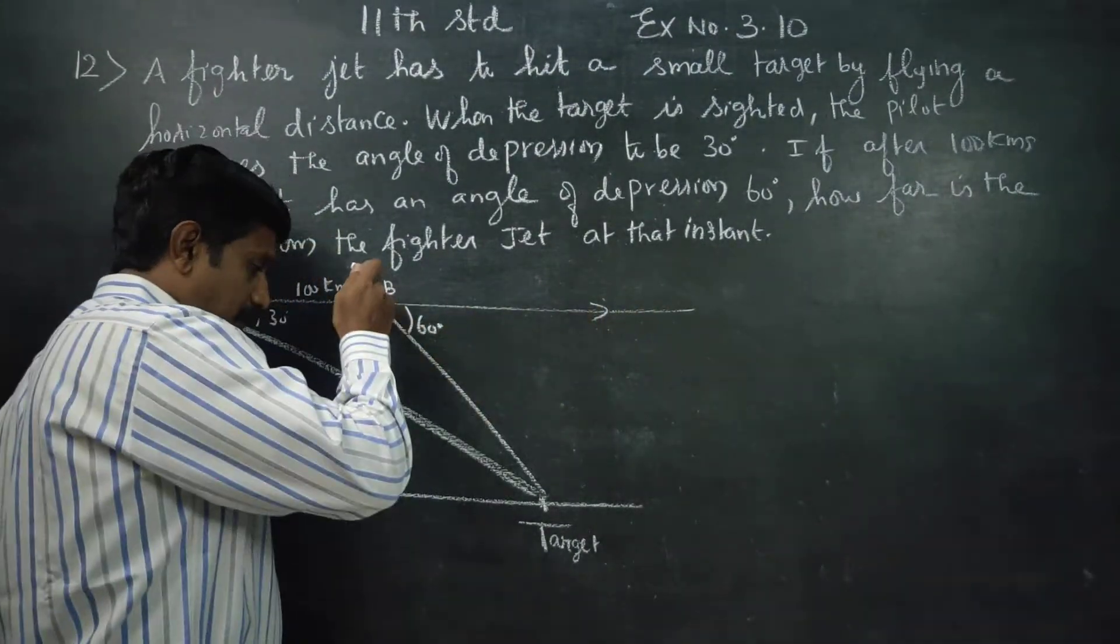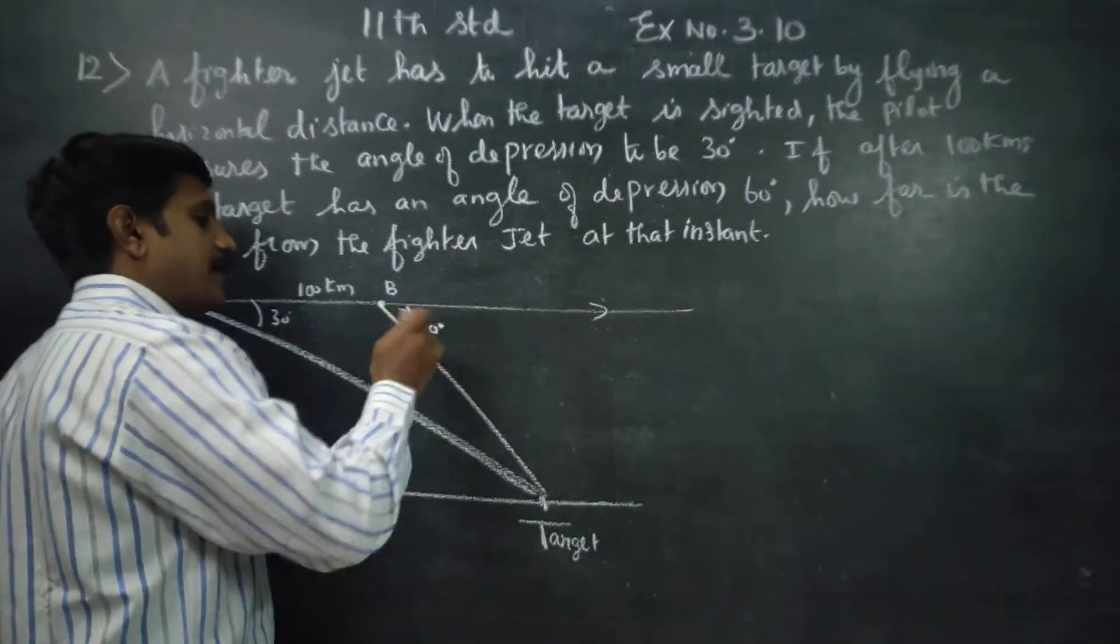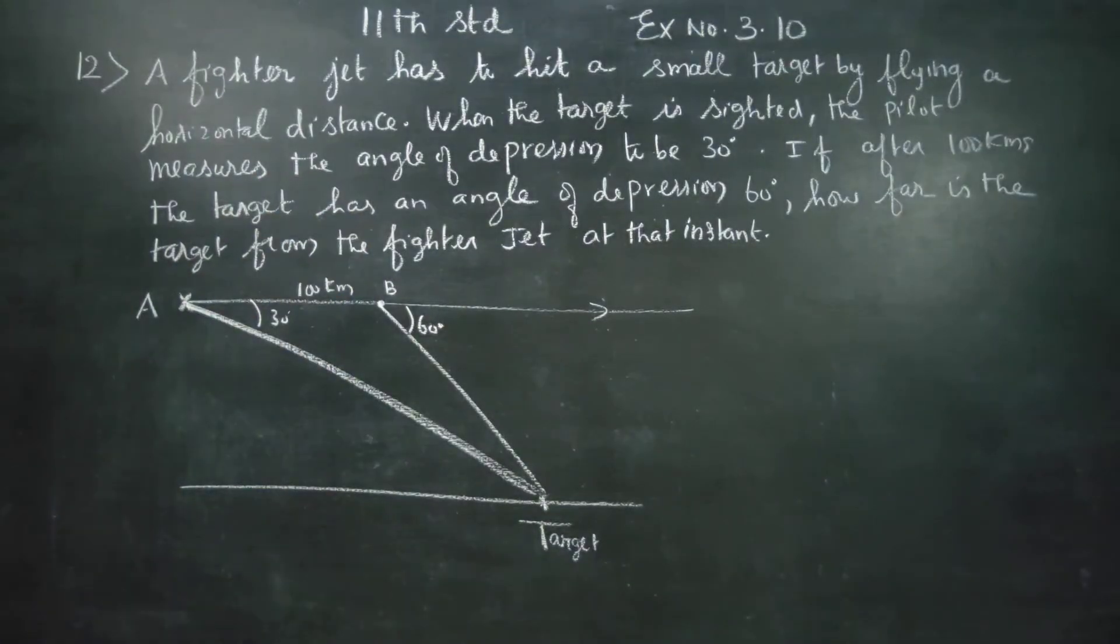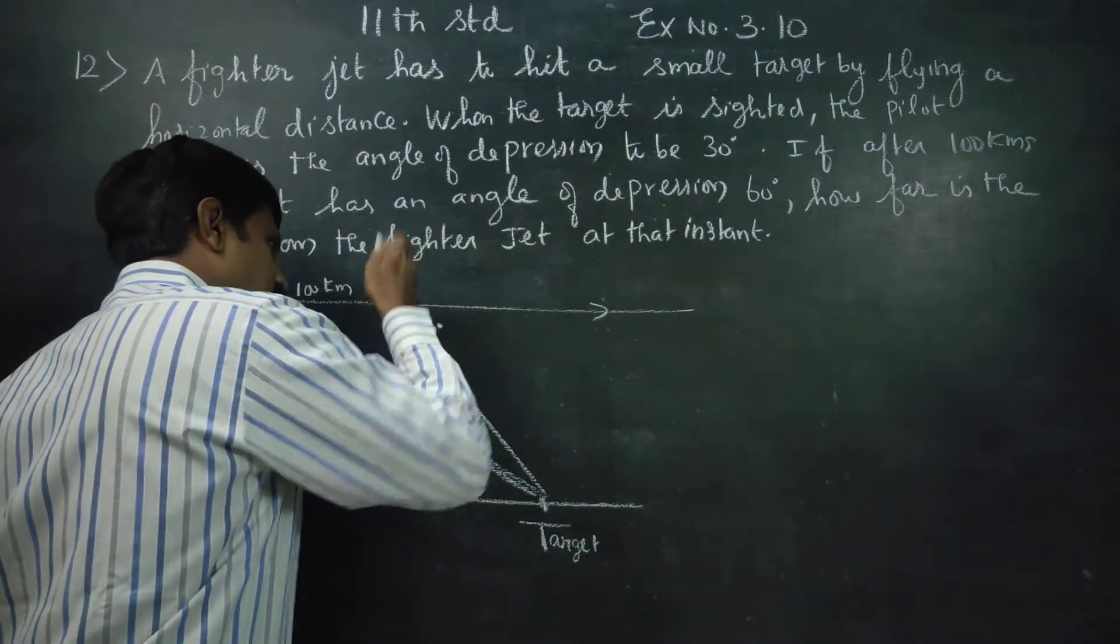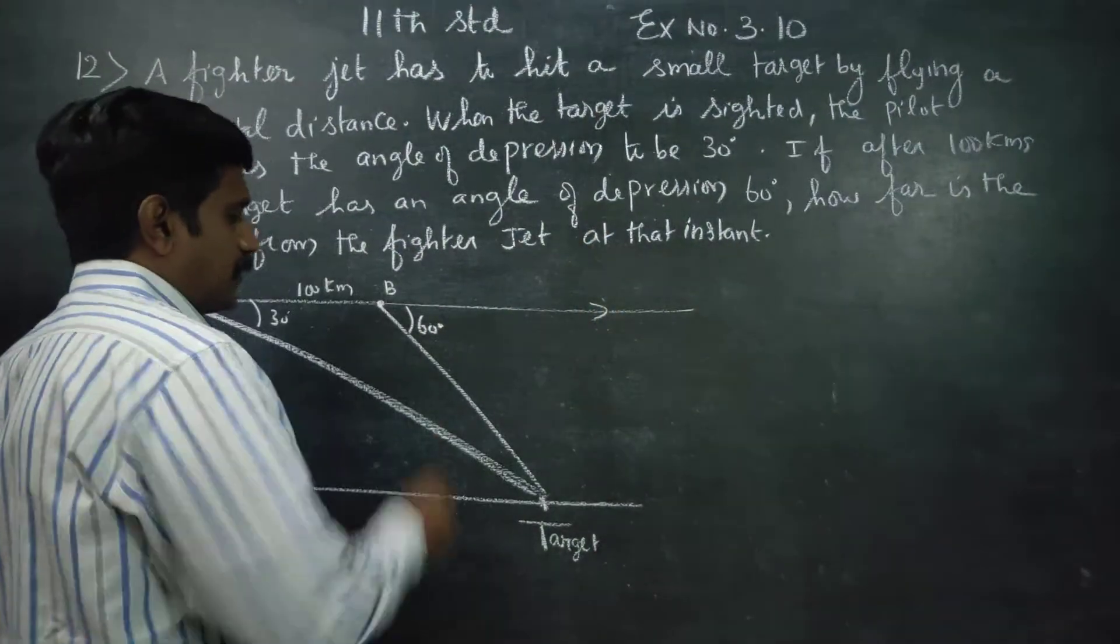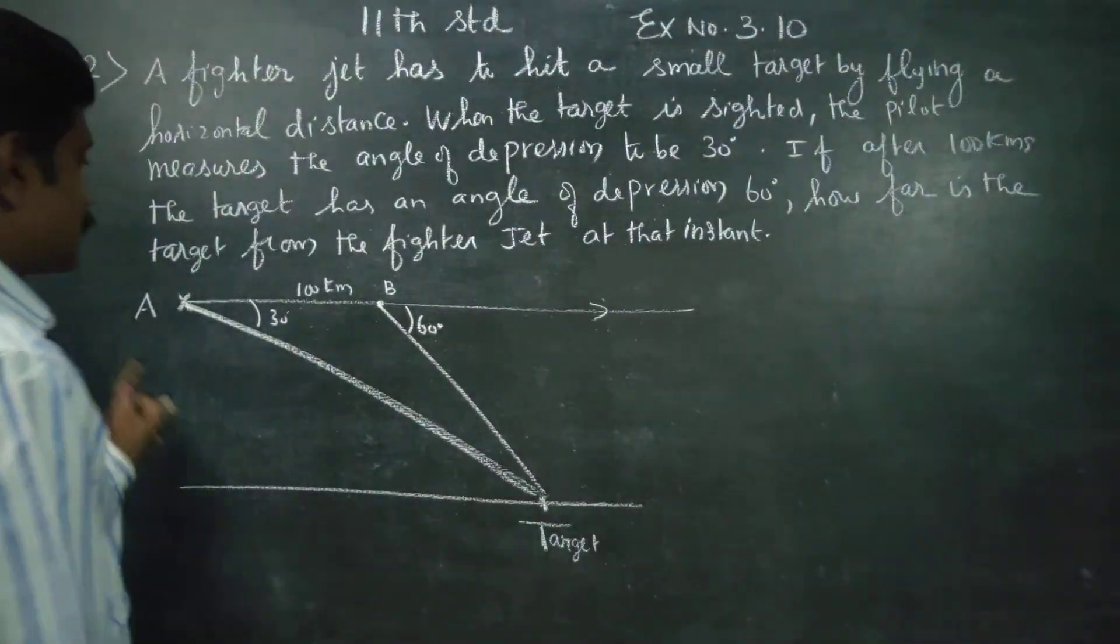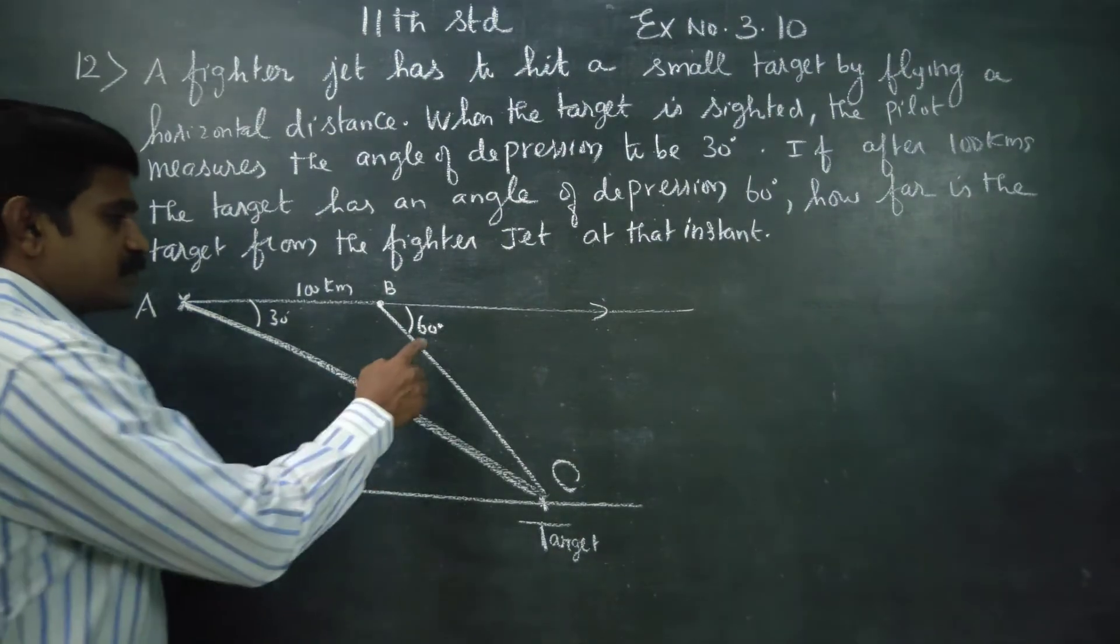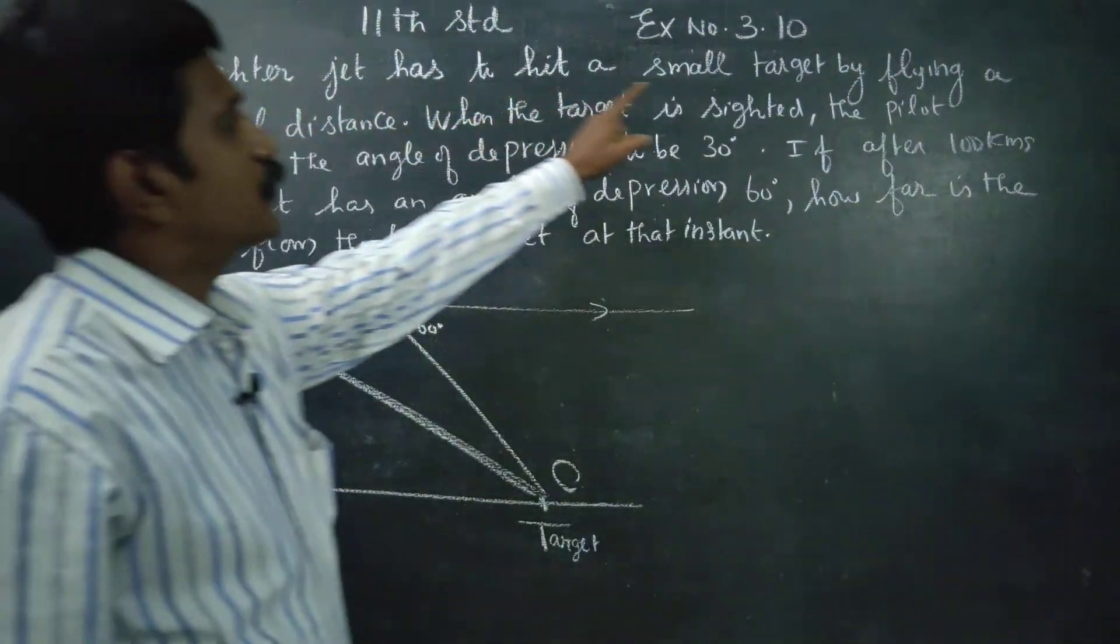The angle of depression is 60 degrees. How far is the target from the fighter jet at that instant? What is the distance between these two?